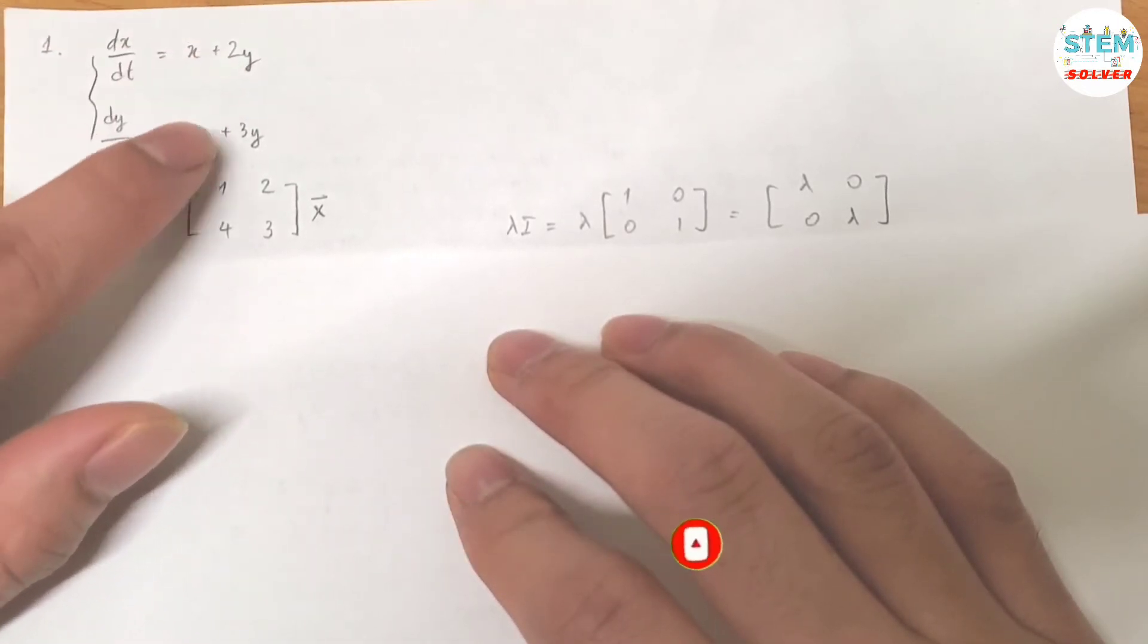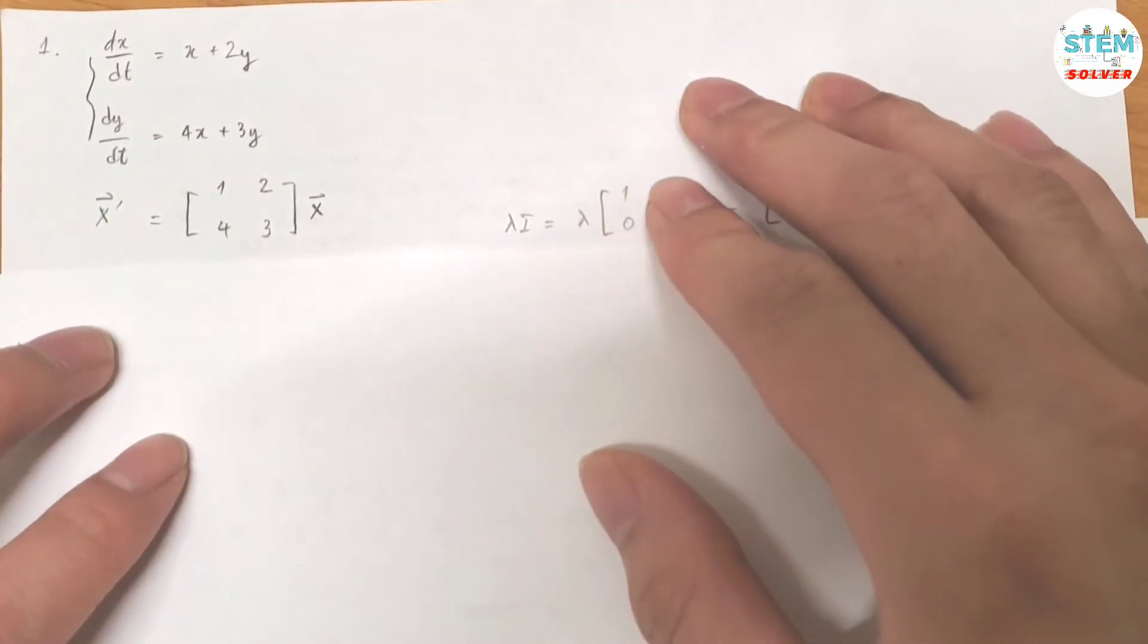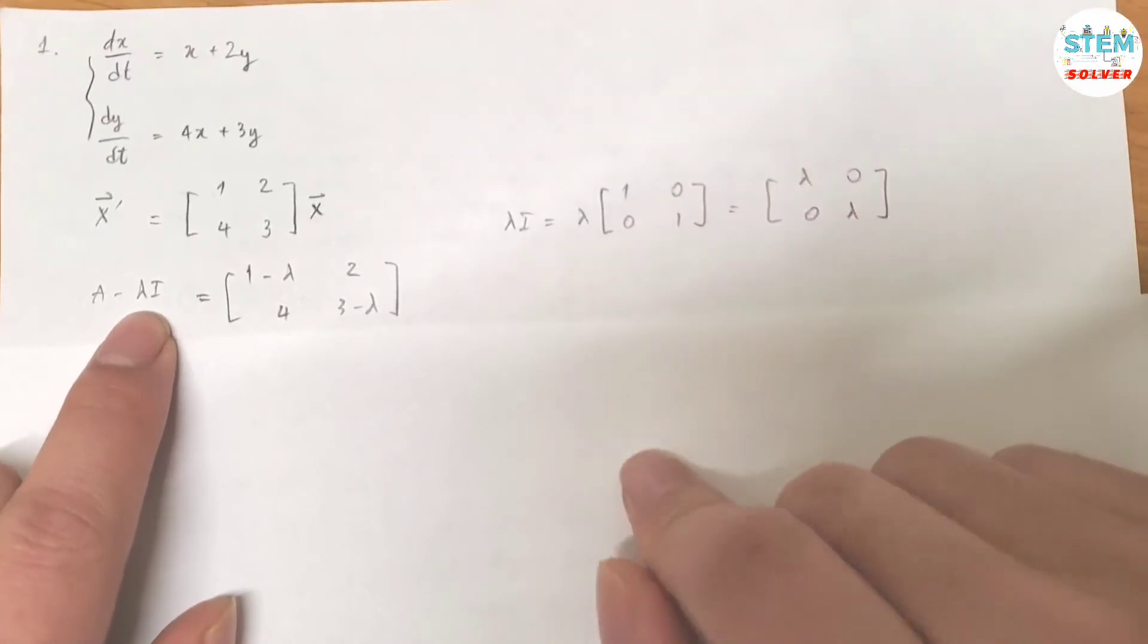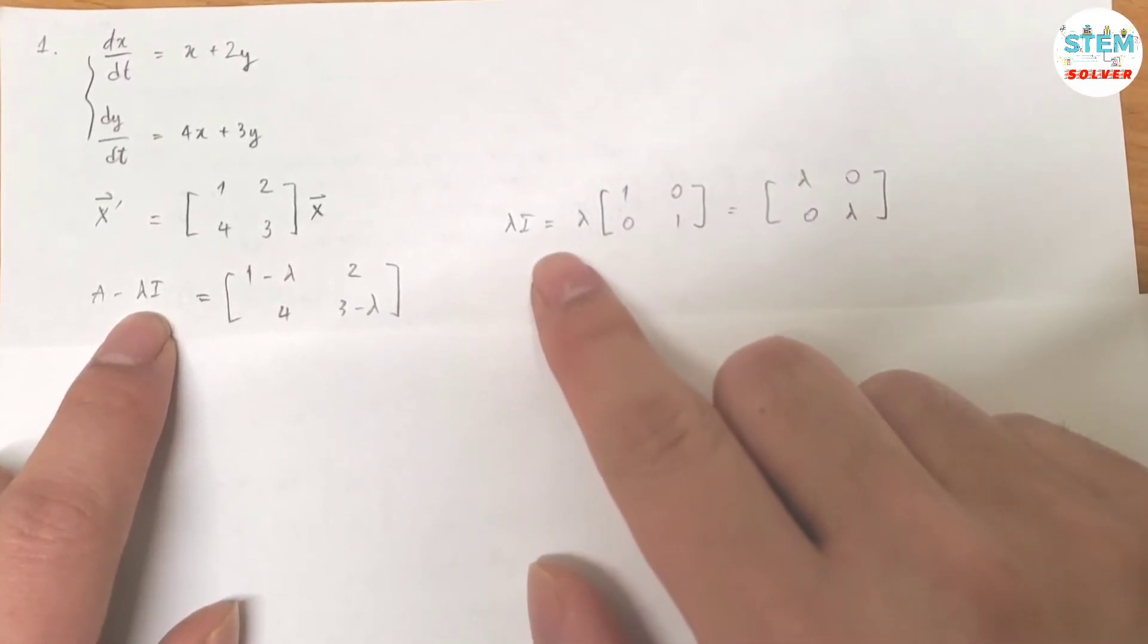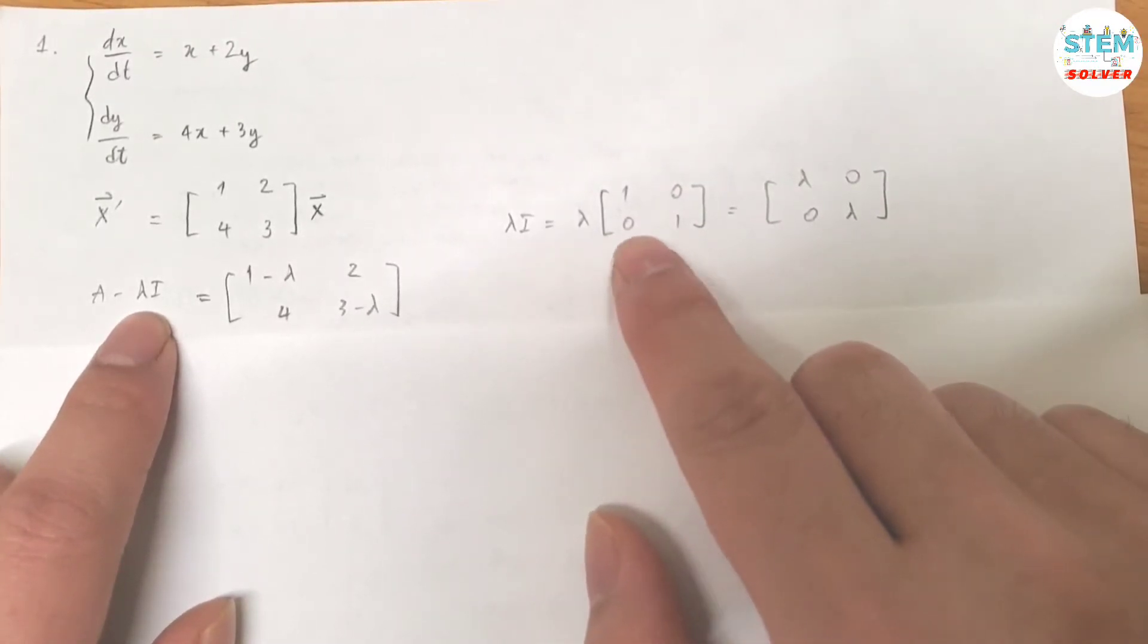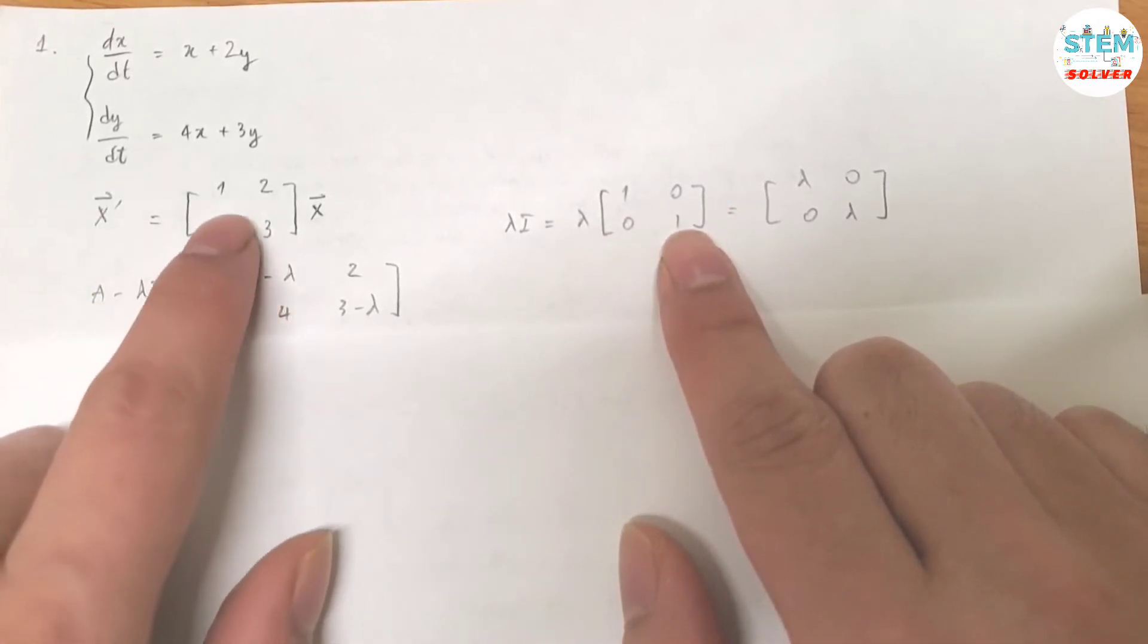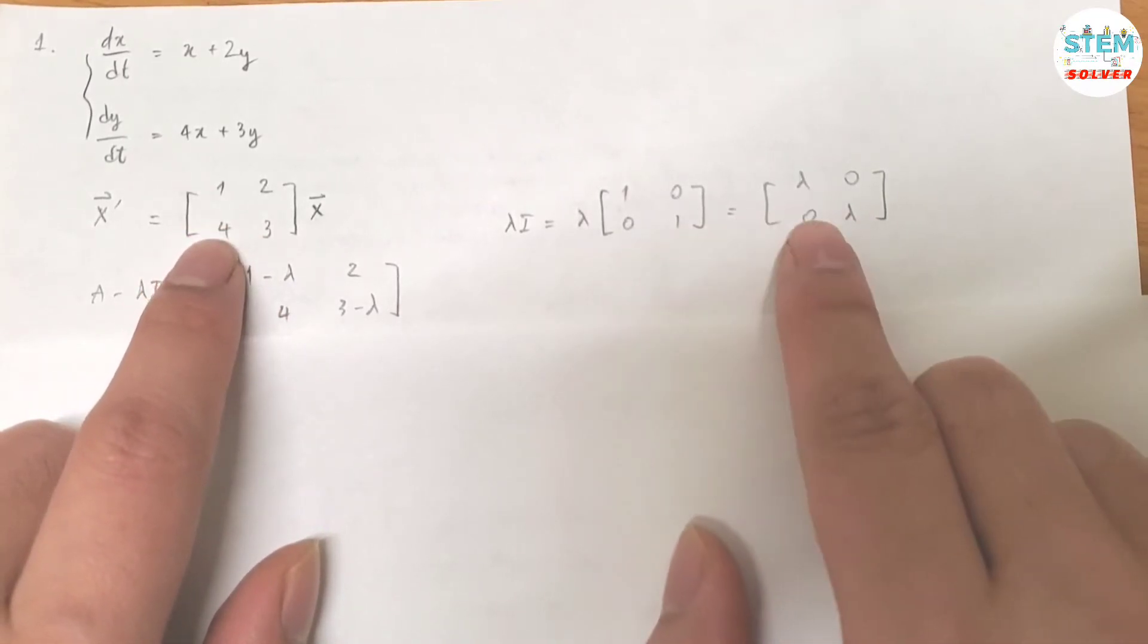For example 1, 2, 4, 3. Alright, and then you are going to find A minus lambda I. What is lambda I? Lambda I is equal to lambda times the identity matrix: 1, 0, 0, 1. And then you take this matrix, let's call this matrix A, and then subtract this matrix.